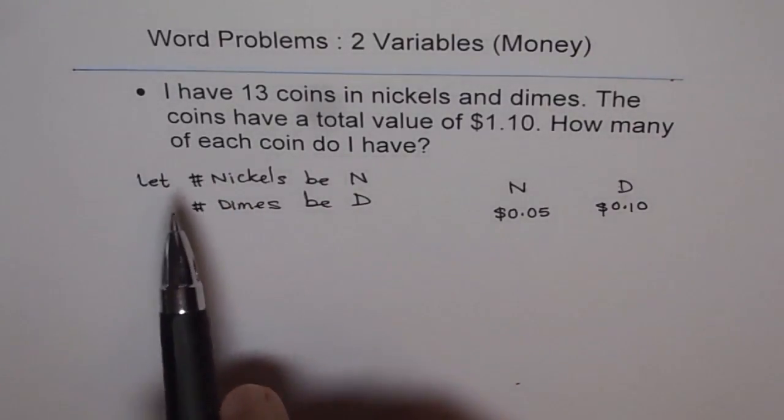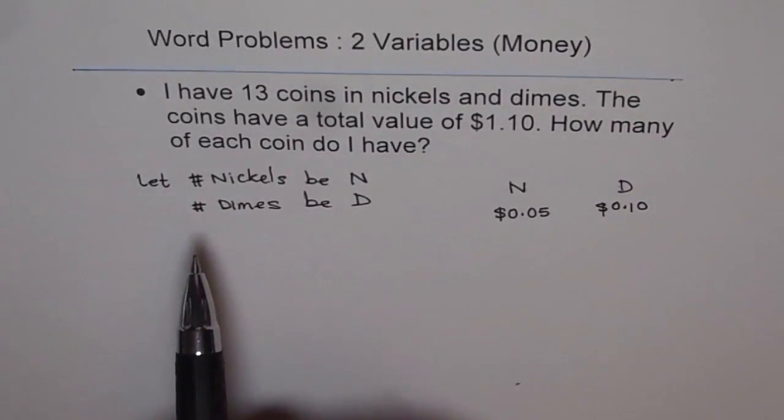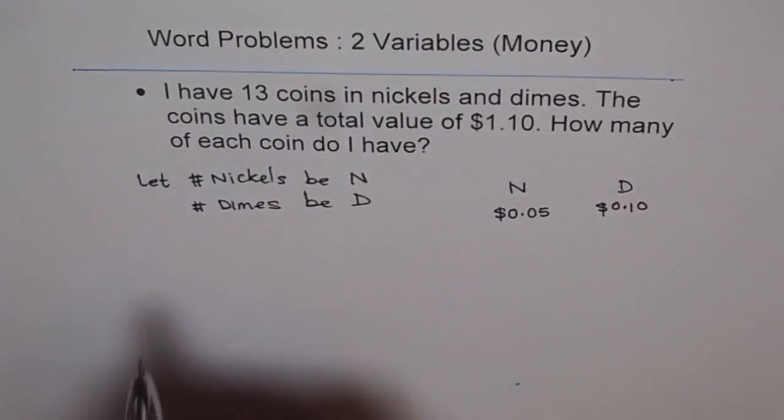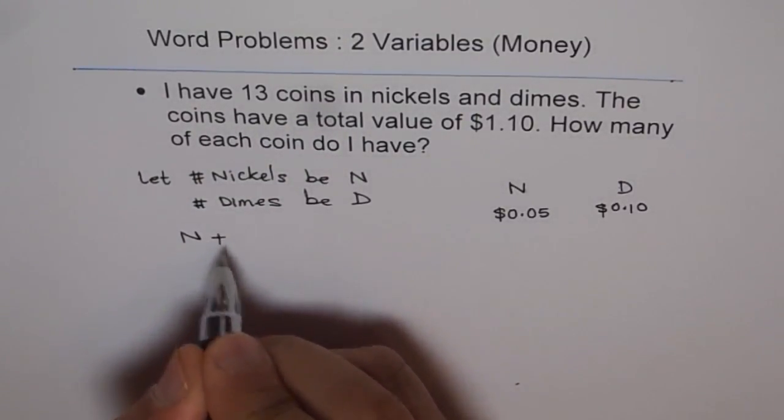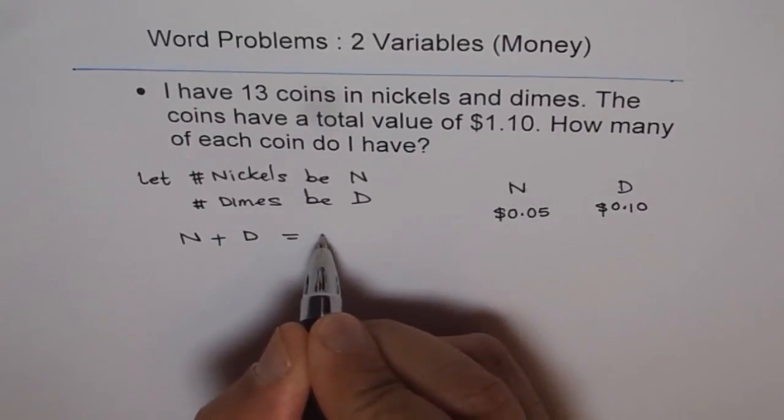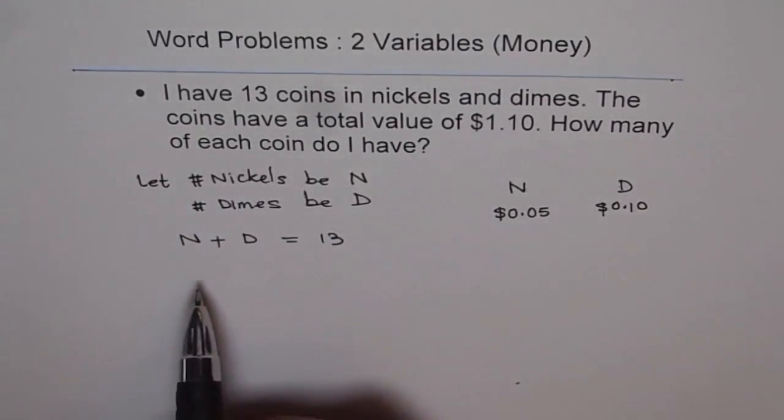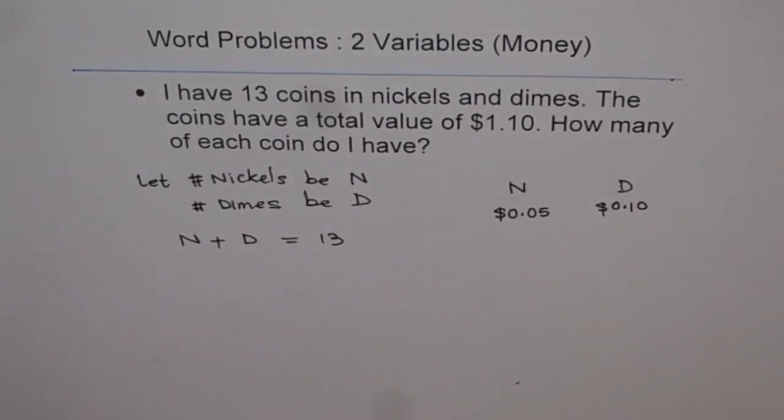And the statement, which is the very first statement is, I have 13 coins in nickels and dimes. That means, sum of n and d should be 13. So number of nickels plus number of dimes is 13. That's what it means.